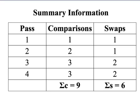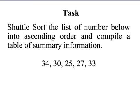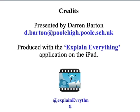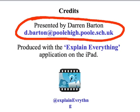At this stage, you might like to rewind or pause the video. I've put a little exercise in for you — a list of five numbers: 34, 30, 25, 27, 33. Have a go and see if you can shuttle sort these numbers yourself and produce your own table of summary information showing the number of comparisons and swaps. I hope you found this video on the shuttle sort algorithm useful. If there are any questions or queries, don't hesitate to get in touch.